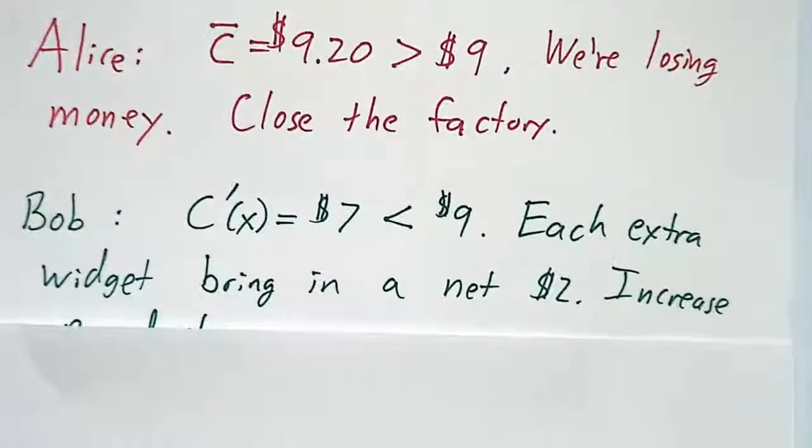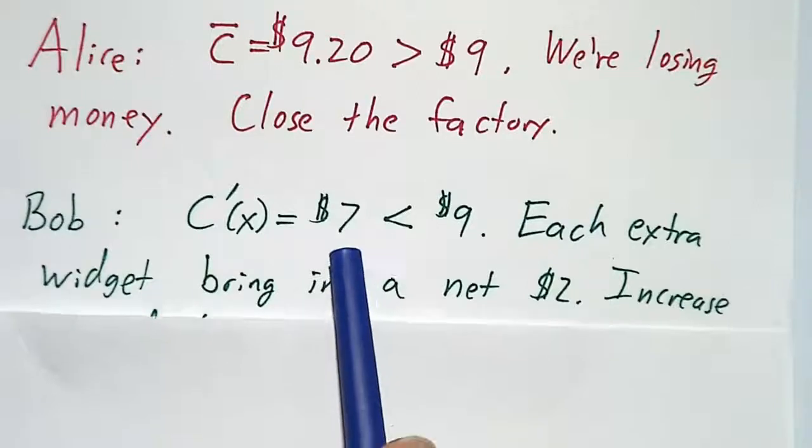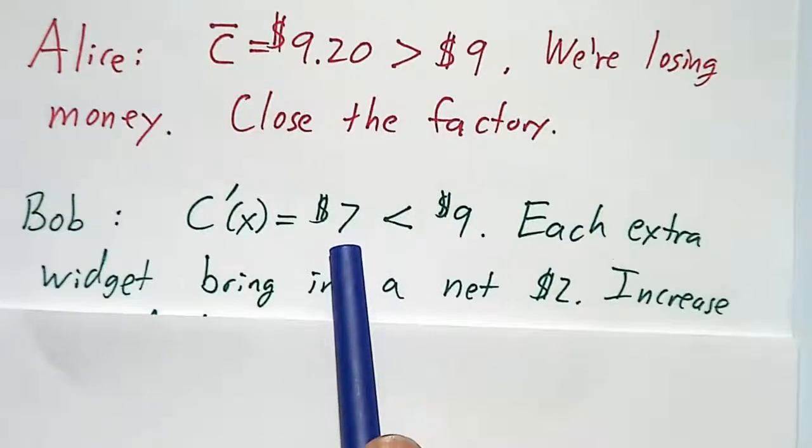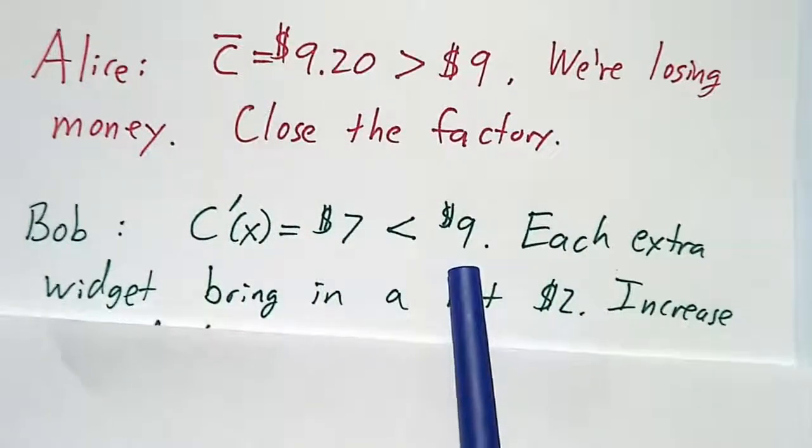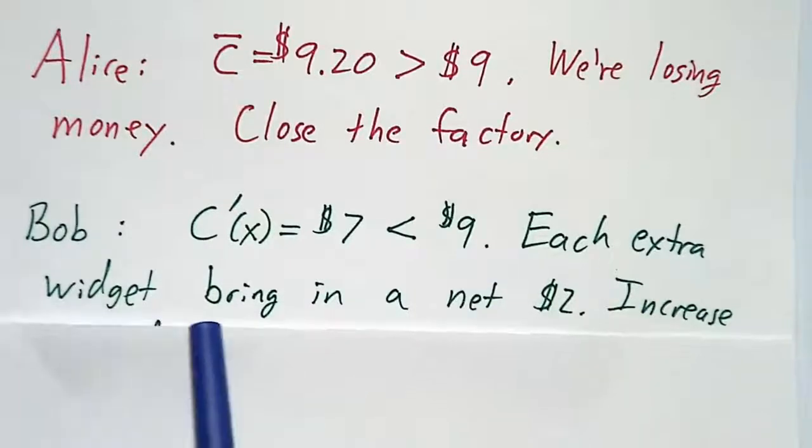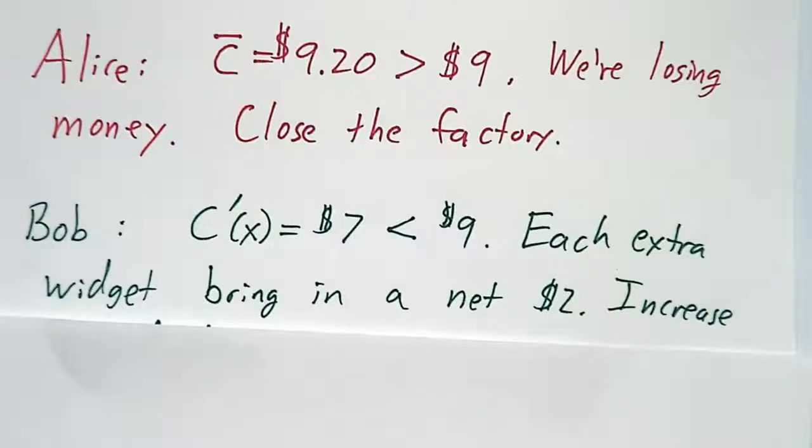Bob says, the marginal cost is $7. Every widget costs $7 to make. But we can sell them for $9. So every extra widget we make is going to bring in a net of $2. What we really want to do is increase production.